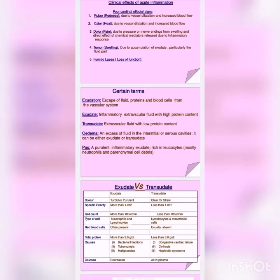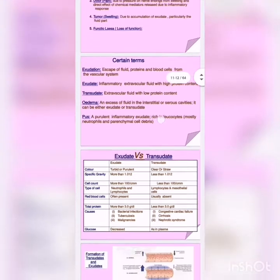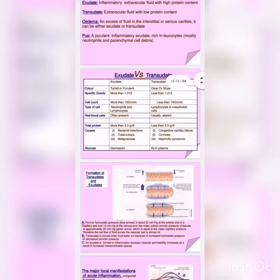There are two types of interstitial fluid formed: exudate and transudate. The main difference between exudate and transudate is that in exudate the specific gravity is more than 1.012, whereas in transudate it is less than 1.012. The reason behind this is that exudate contains proteins as well.